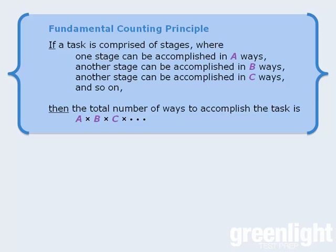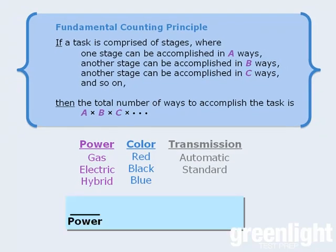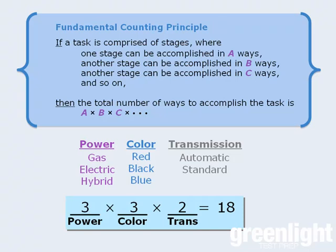So let's apply this principle to our question. We can take the task of building a car and break it into three stages. One stage is selecting the car's power source, another stage is selecting the car's color, and another stage is selecting the car's transmission. In how many ways can we select the power source? We can accomplish this stage in three ways. In how many ways can we choose a color? We can accomplish this stage in three ways as well. And finally, there are two ways to accomplish the last stage. Applying the fundamental counting principle, the total number of ways to accomplish all three stages and build our car will be equal to the product of the number of ways to accomplish each stage. This product equals 18, so we can create 18 different cars.